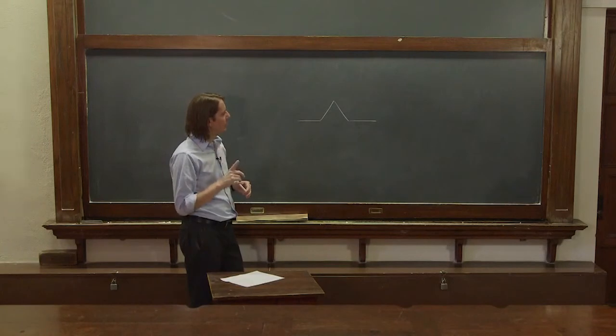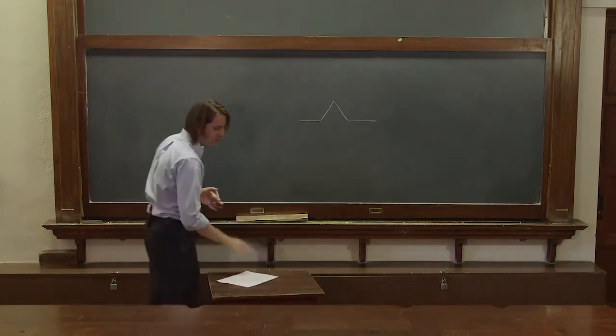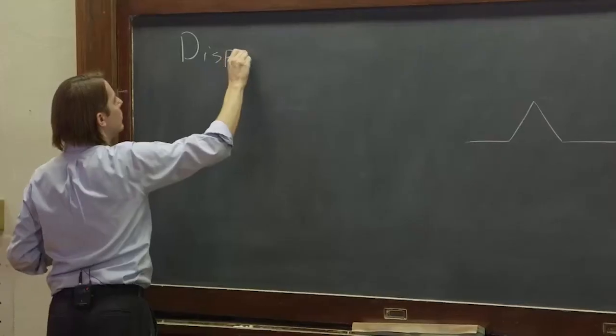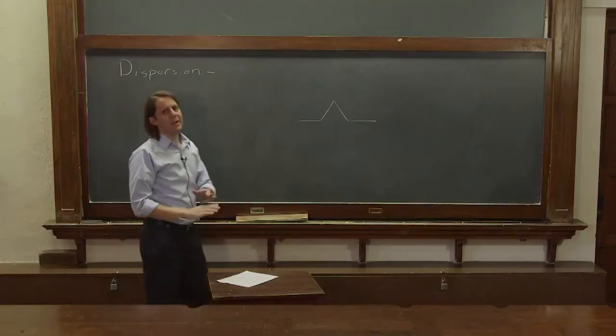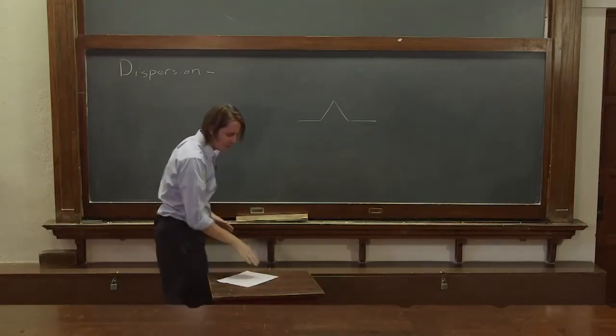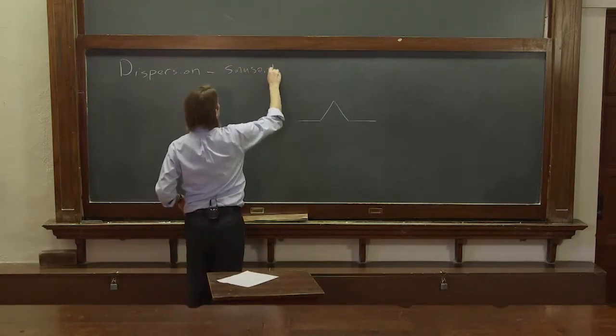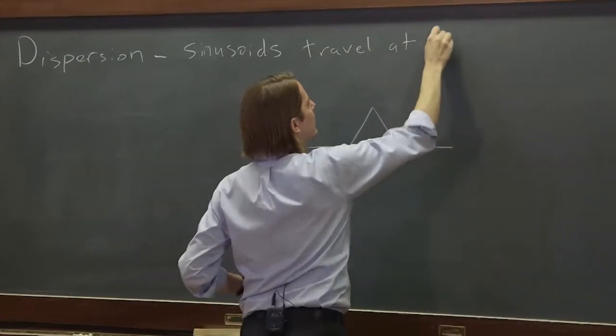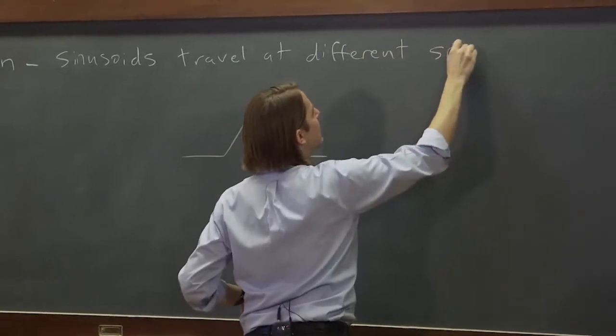But there's a third thing that's actually not quite so hard to deal with that we can definitely talk about and it's called dispersion. So here is just a get-you-started definition of dispersion. It's that sinusoids travel at different speeds in the medium.